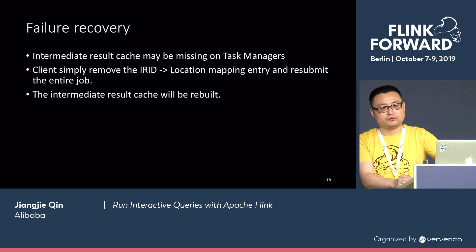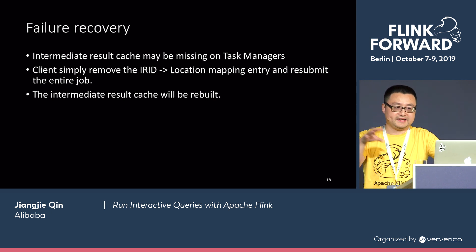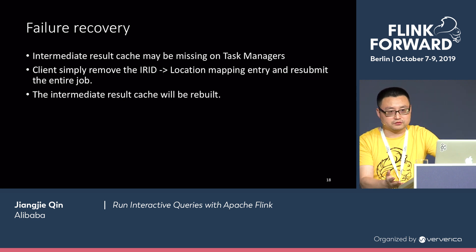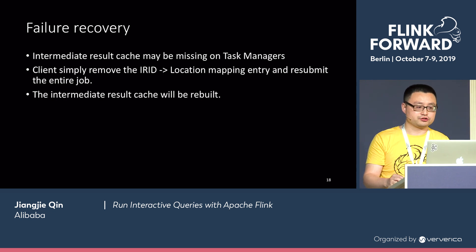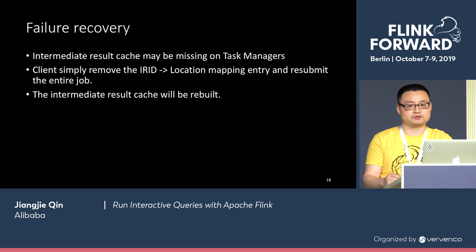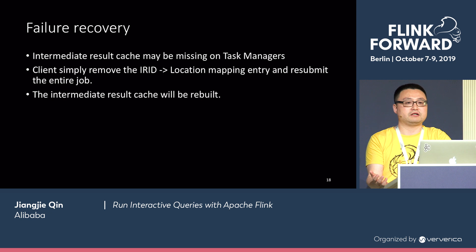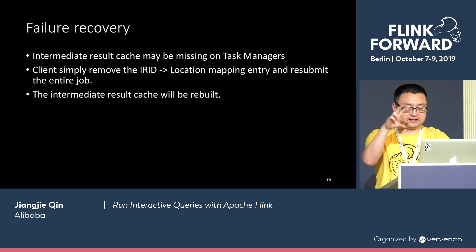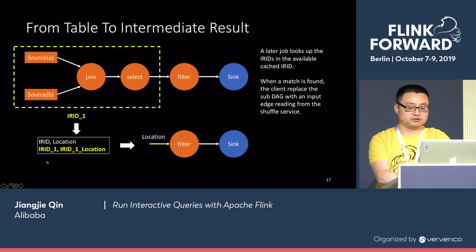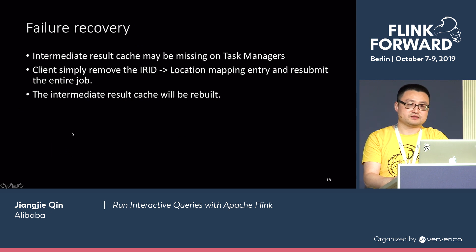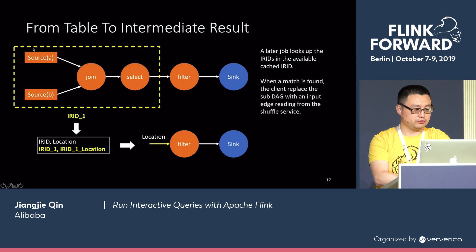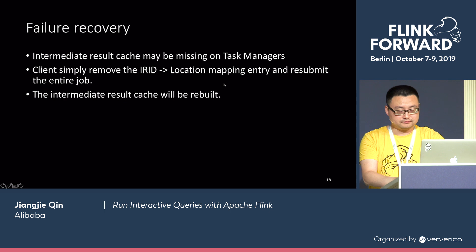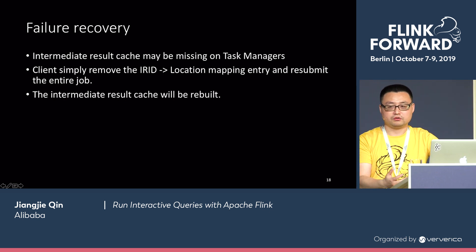What about failure recovery? What if the cached result in the shuffle service is lost — for example, if the Task Manager fails? In our case, the intermediate result cache is allowed to be missed in the Task Manager. The client will apparently fail to find the intermediate result and receive an exception from the runtime saying it cannot find the intermediate result. In this case, the client will delete the entry of the intermediate result from its lookup table and resubmit the job again with the entire graph. The intermediate result that is supposed to be cached will be recomputed and cached again.